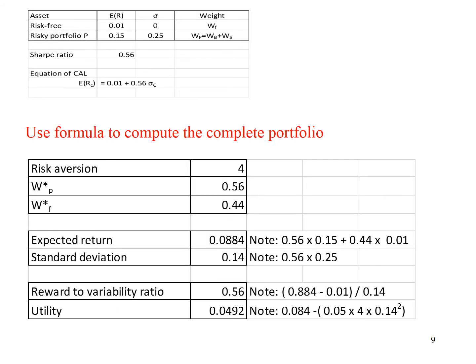We can use formula to compute the complete portfolio. Take note of this formula. Use the formula to compute the weight of investment in risky portfolio P. The weight of investment in risk-free asset is 1-WP, which is 1-0.56 and the answer is 0.44. After calculating the weight of investment, the expected return and standard deviation of the complete portfolio can be calculated too, as shown in the working. Please try out on your own to practice the calculation.